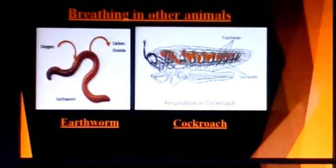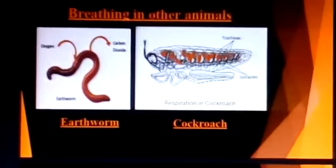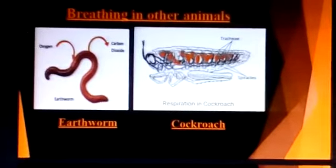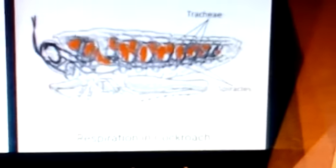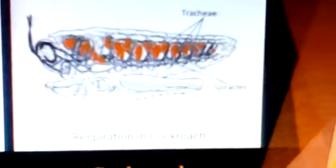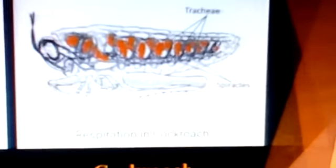You can see the picture of a cockroach on the right side. How do cockroaches breathe? A cockroach has small openings on the sides of its body. Other insects also have similar openings. These openings are called spiracles.